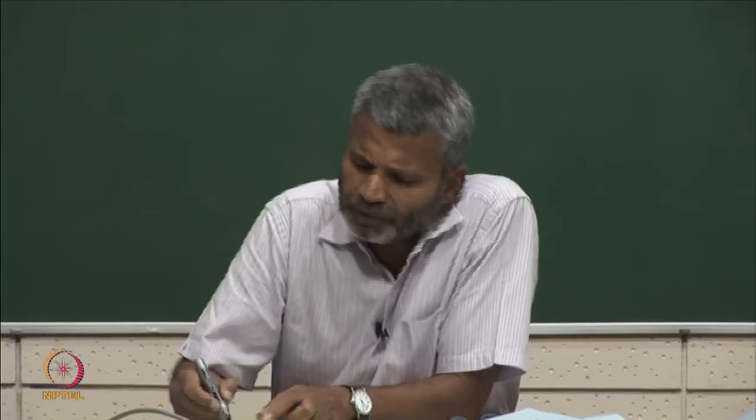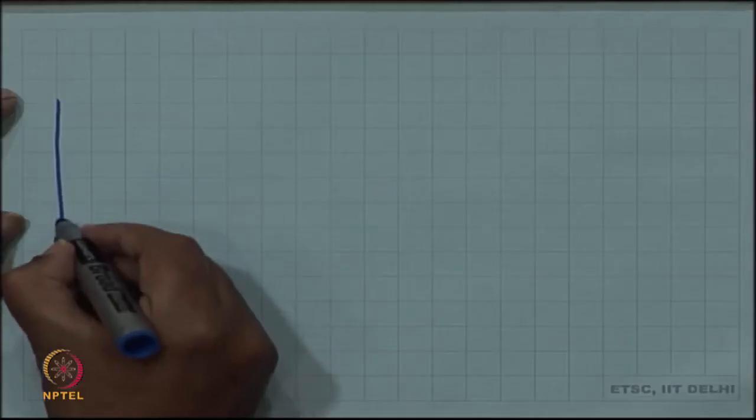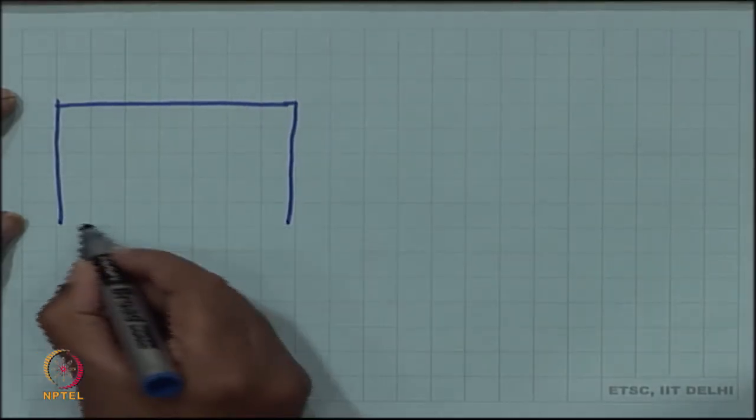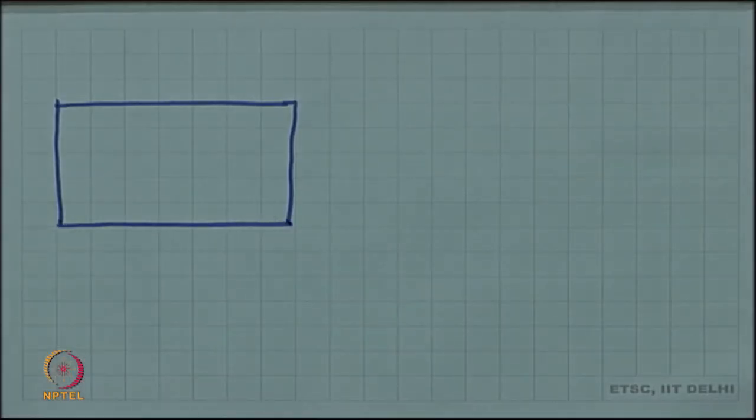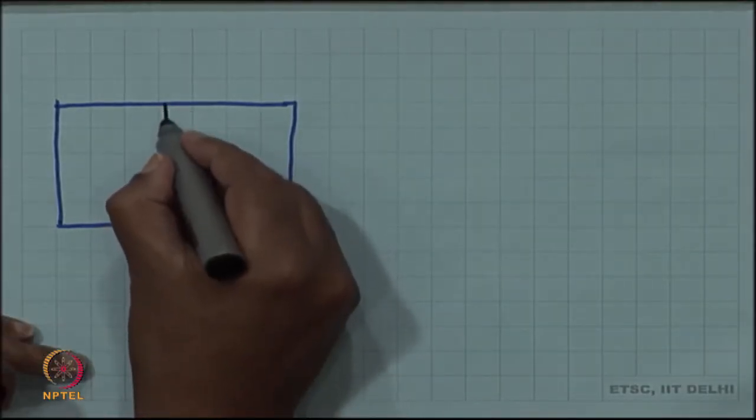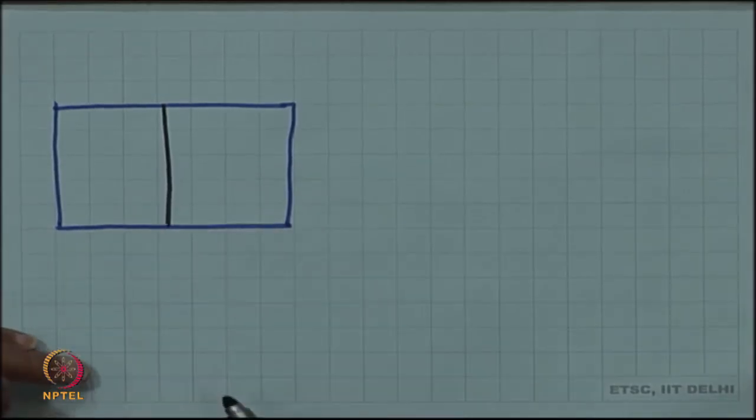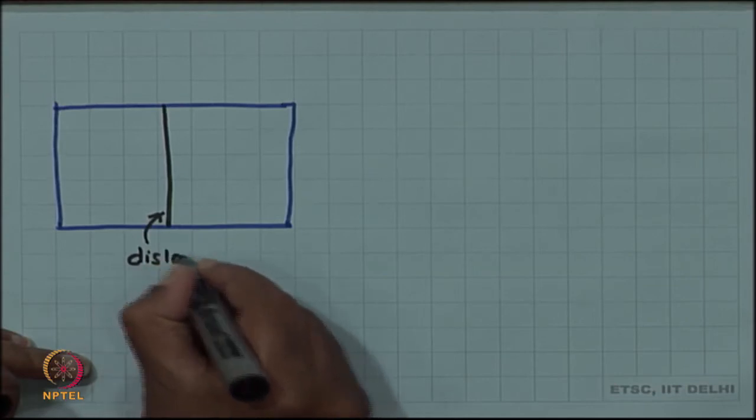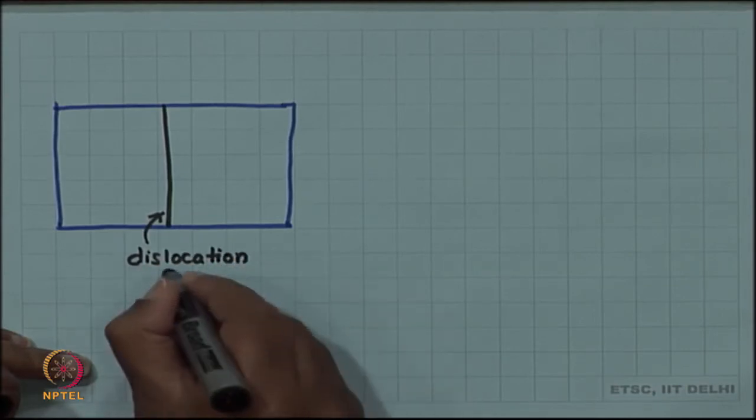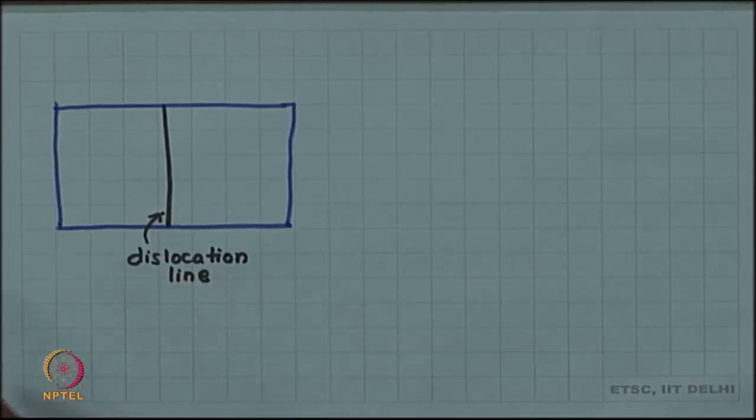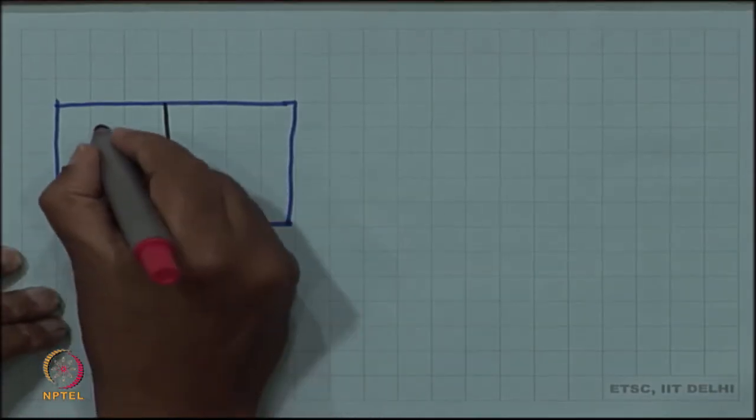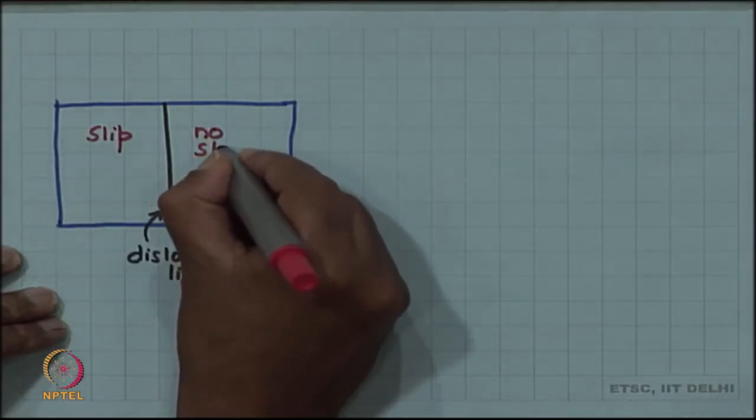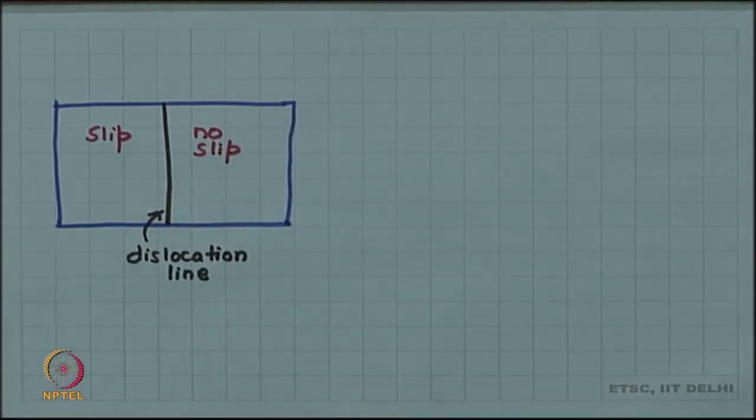I have been drawing for you many times slip plane and dividing the slip plane into two regions, slip and not slip, by a line which becomes our dislocation line. One side of the line is slip and the other side is not slip, so I call it slip and no slip regions.